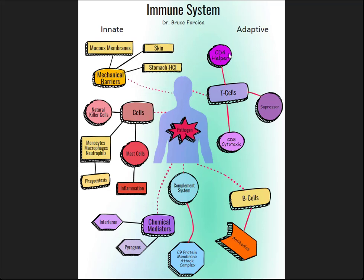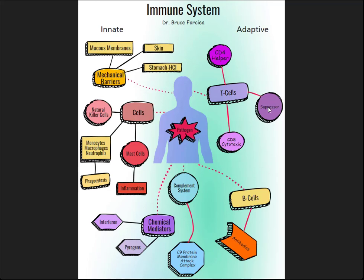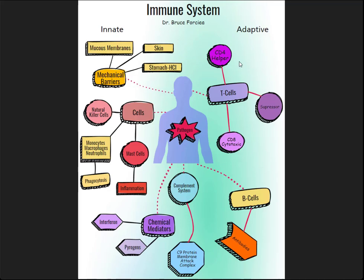Now let's look at adaptive immunity. Remember there has to be an antigen in order to have adaptive immunity, and there are different types of lymphocytes here — the T cells and the B cells. The T lymphocytes include the CD4s, the CD8s, and the suppressor T cells. CD4 represents what's called the cluster of differentiation number four protein, which is embedded in the cell membrane. When this cell becomes activated, it secretes cytokines to help activate other cells — that's why they call it a helper T.